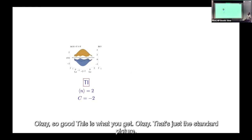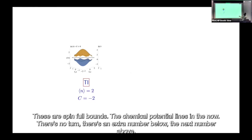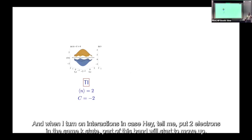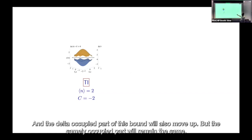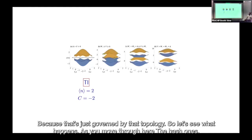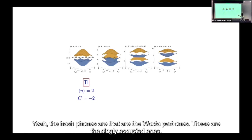This is the standard picture: spin-full bands, chemical potential lies in the gap, Chern number below and above. Each blue band is a composite of spin-up and spin-down. When I turn on interactions in k-space, anytime I put two electrons in the same k-state, part of the band moves up — the doubly occupied part — while the singly occupied part remains the same, governed by topology.